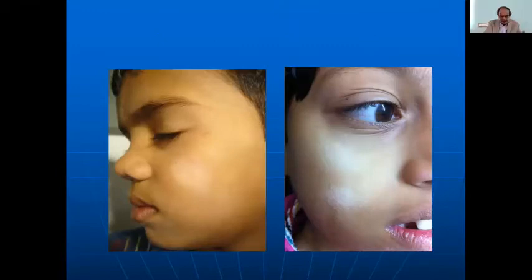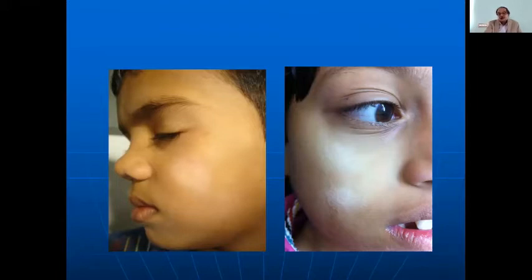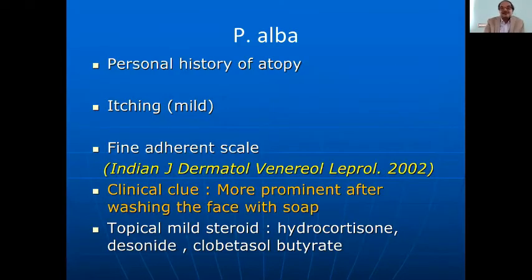This is the most common presentation — a white patch on the face with very subtle hypopigmentation, very mild scale that you cannot well define. If you look carefully at the pictures, you can see the Dennie-Morgan folds, indicating the child also has some atopy. This is nothing but pityriasis alba.